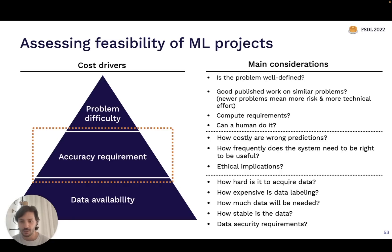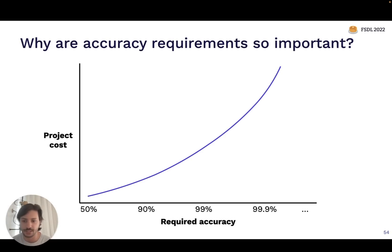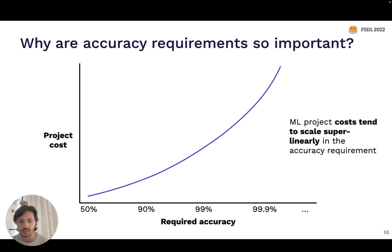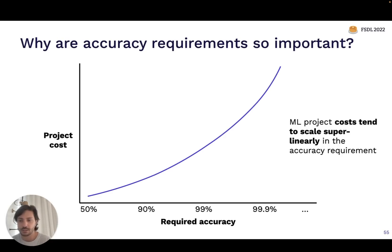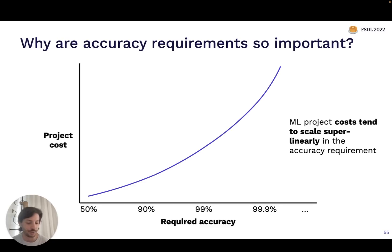I want to double-click on accuracy requirements. The fundamental reason this is such an important cost driver is that project cost tends to scale super-linearly with your accuracy requirement. As a rough rule of thumb, every time you add an additional nine to your required accuracy — moving from 99.9% to 99.99% — might lead to something like a 10x increase in project costs, because you might expect to need at least 10 times as much data, plus a bunch of additional infrastructure and monitoring support to ensure the model is actually performing that accurately.